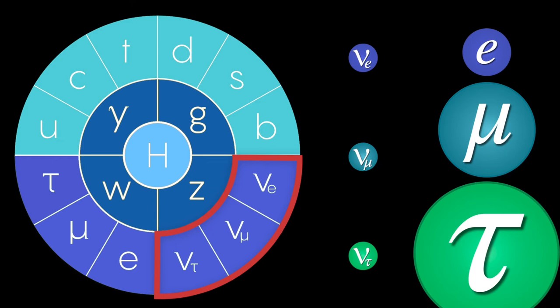The sun only produces electron neutrinos, but if they would be transformed to muon or tau neutrinos on their way to Earth, that would make the deficit of the captured electron neutrinos understandable.